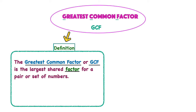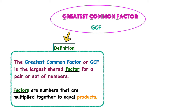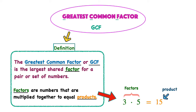Before we move on, let's go ahead and review what factors are. Factors are numbers that are multiplied together to equal products. If I take the numbers 3 and 5 and I multiply them together, those numbers are now called factors because they're being multiplied, and factors equal products. So when I take the two factors, 3 and 5, and I multiply them together, I get a product of 15. And on the reverse side, I can also say that 5 and 3 are factors of 15.